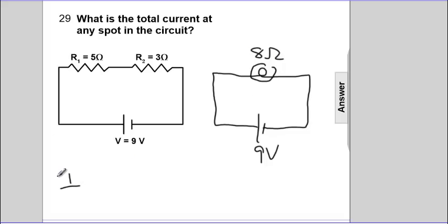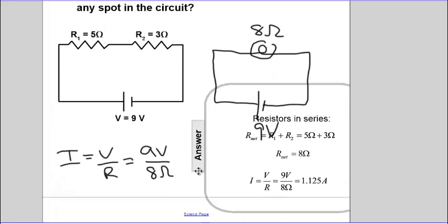I is V over R, and the voltage applied is nine volts divided by the resistance eight ohms. Nine over eight is one point one two five amps.